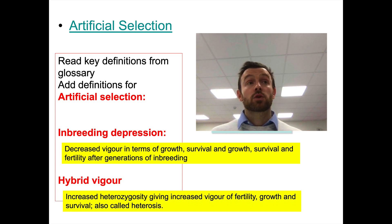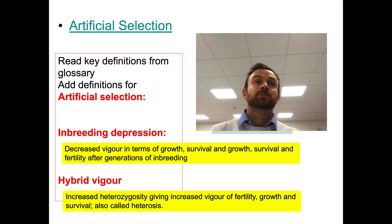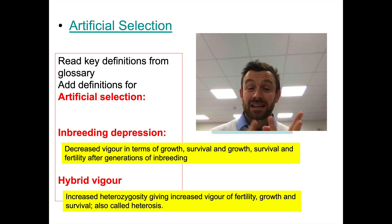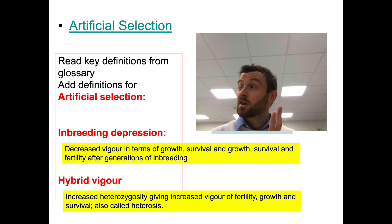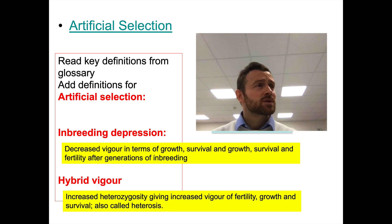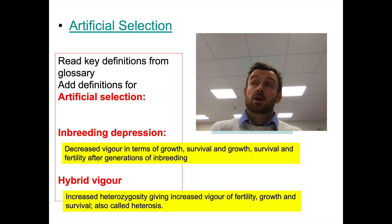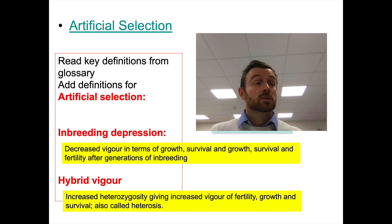In essence, the genetics unit has covered: Mendel, monohybrid crosses, dihybrid crosses, linkage — sex linkage and autosomal linkage — then relationships between alleles such as epistasis and collaborative action, chi-squared and how we use it to determine whether linkage is occurring, and then natural selection, speciation, and artificial selection. That's the unit done.